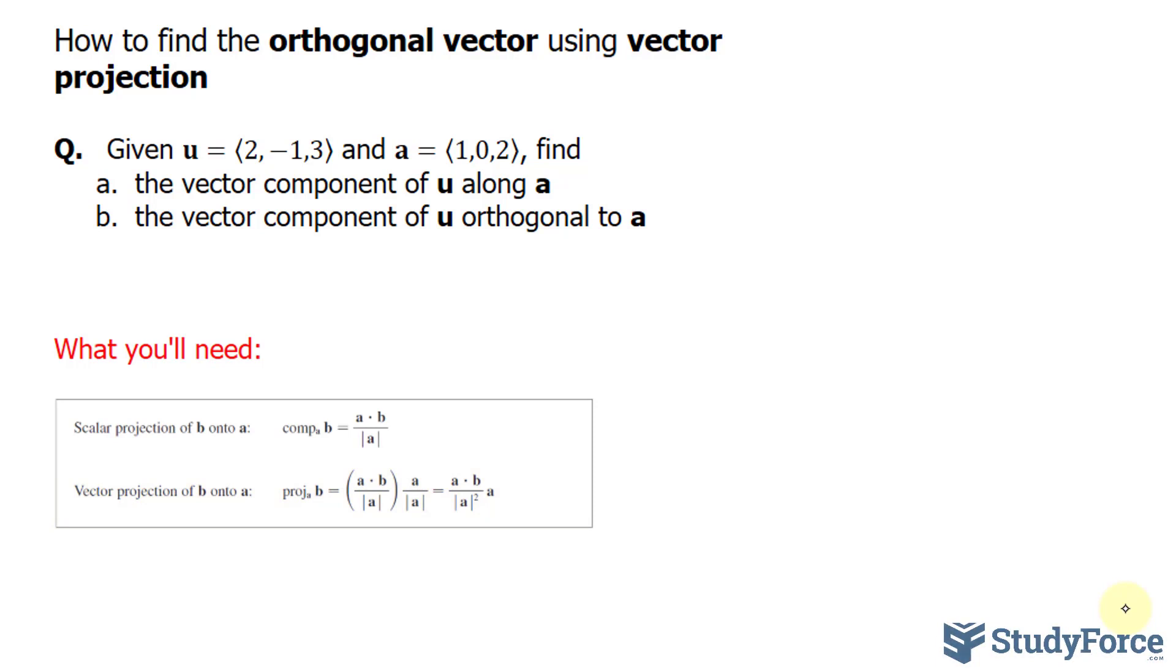Now in case you're confused by that, let's just draw two vectors, u and a, on a 2D plane. So this is vector a, and this is vector u. So I'll label this u, and I'll call this a.